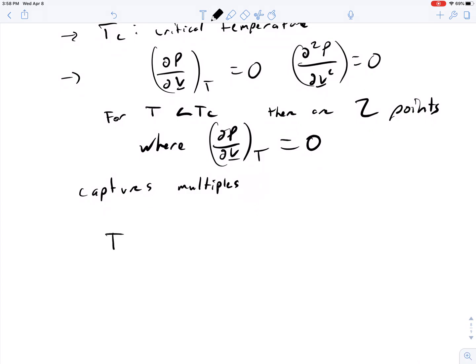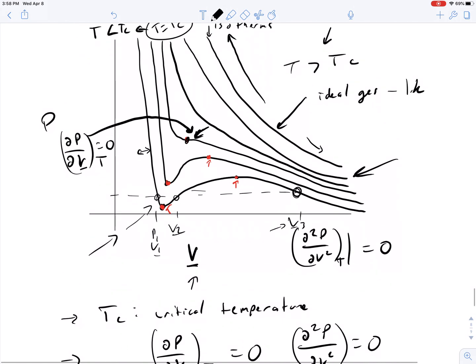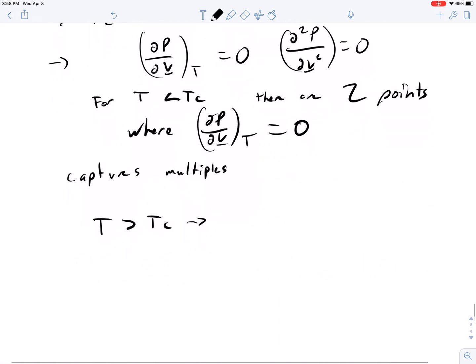Lastly, we have a region where temperature is greater than Tc. And whenever the temperature is greater than the critical temperature, for any given value of pressure, it only crosses each isotherm one time. These isotherms never come back up. They are just monotone decreasing. So for any given value of pressure, there is only one volume.